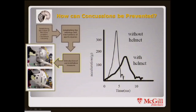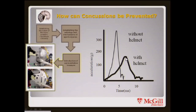If we look at the left of the diagram, we can do surrogate testing with a cranial form. We can introduce certain protective devices such as helmets and see how we can modify the acceleration peak to a lower value when those devices are introduced.